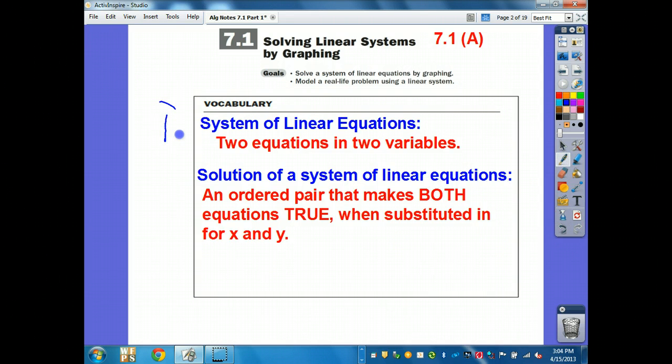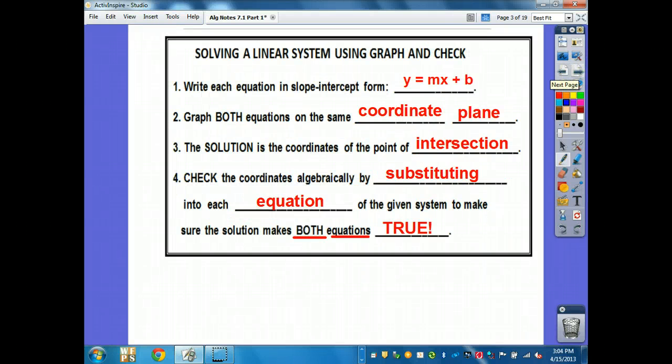Two vocab: systems of a linear equation and the second one, solutions of the system. How do we find that solution? You take the one equation, you put it on your graph, take the other equation, put it on that same graph. Wherever they intersect, right here, the intersection, that one ordered pair is the solution that will work in both equations.